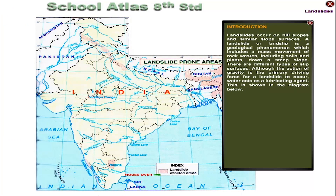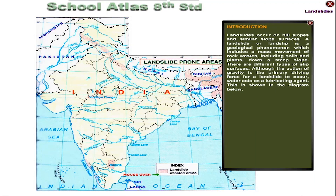Landslides occur on hill slopes and similar slope surfaces. A landslide or landslip is a geological phenomenon which includes a mass movement of rock base, including soils and plants, down a steep slope. There are different types of slip surfaces.